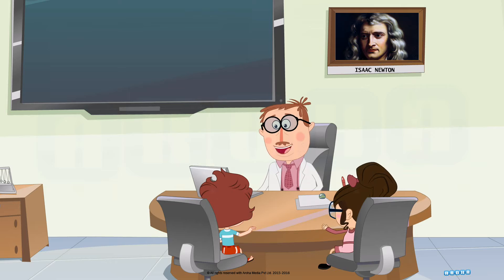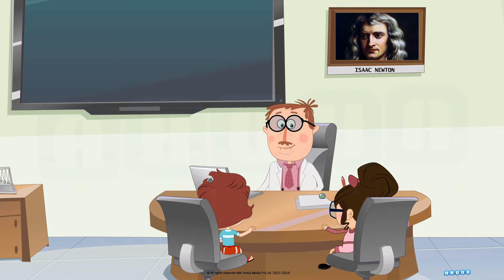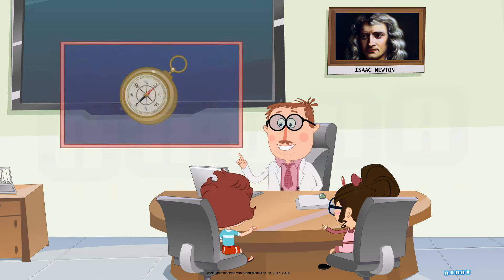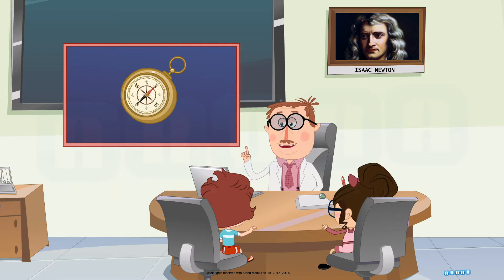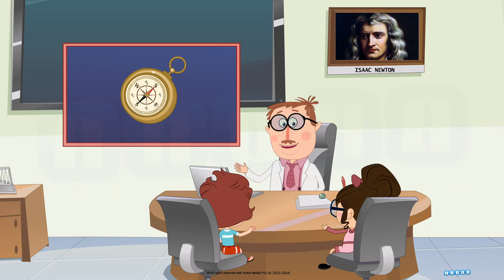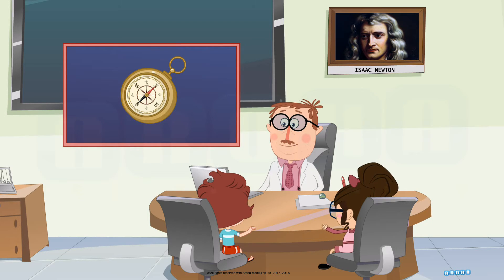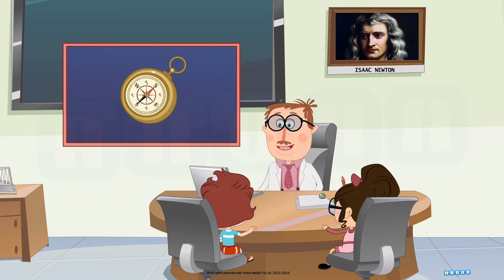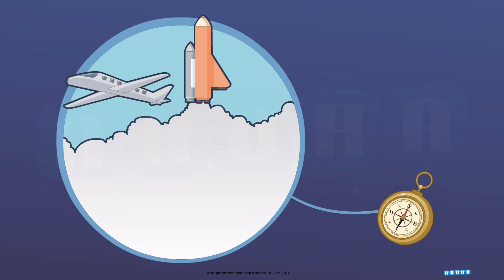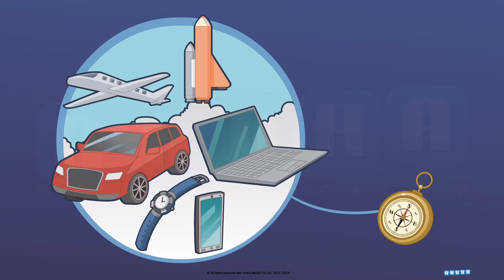Where are magnets used? One of the earliest uses of magnet was in a compass. A compass helps us navigate. The needle of the compass is a magnet which points just a little to the left of the North. Nowadays, we use compass in every device.